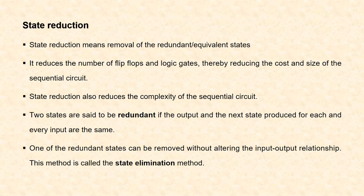Next, state reduction. While designing a sequential circuit it is very important to remove the redundant or equivalent states. State reduction means removal of these redundant or equivalent states. This reduces the number of flip-flops and logic gates, thereby reducing the cost and size of the sequential circuit. It also reduces the complexity. Two states are said to be redundant or equivalent if the output and the next state produced for each and every input are the same. One of the redundant states can be removed without altering the input-output relationship — this method is called the state elimination method.